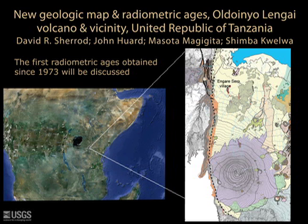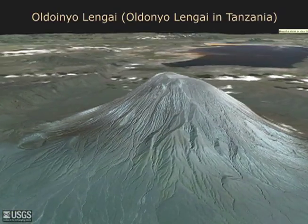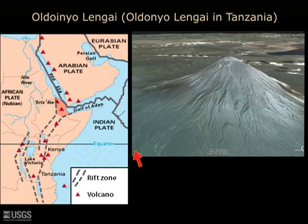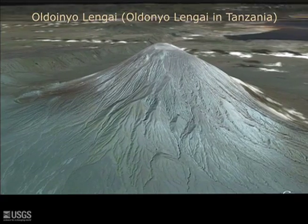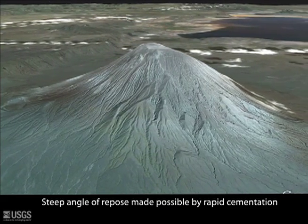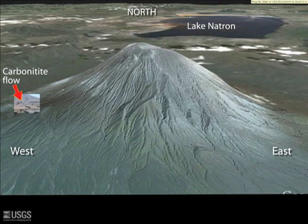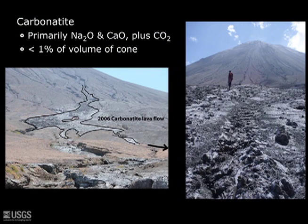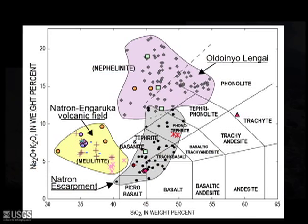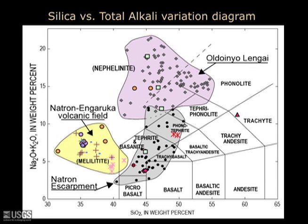These ages are nearly the first from rocks on or immediately adjacent to the volcano, preceded only by an age published in 1973 from a whole rock sample whose location is poorly described. Ol Doinyo Lengai is a tall stratovolcano located where the East African Rift crosses northern Tanzania. The volcano towers 2,000 meters above the adjacent plain. The upper part of the cone is as steep as or steeper than the angle of repose, made possible by the rapid cementation of its volcanic ash layers. Ol Doinyo Lengai is famous for its eruptions of carbonatite lava flows, the only volcano in the world to have done so in modern times. But regardless of that claim to fame, it produces chiefly silicate volcanic rocks, with nephelinite and phonolite the most common products. Carbonatite forms less than 1% of the cone.